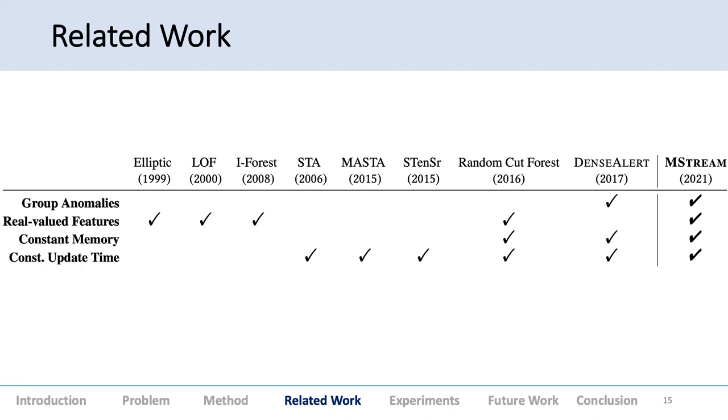This table shows features: group anomalies, real-valued features, constant memory, and constant update time. These three were not completely streaming. Only DenseAlert could detect group anomalies somewhat, which I'll discuss after a few slides. DenseAlert missed real-valued features, but random cut forest could do it. M-STREAM was able to do all four.